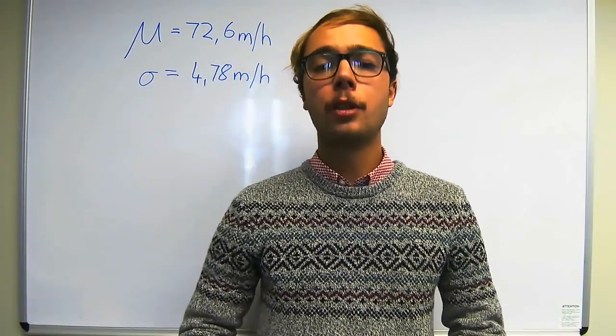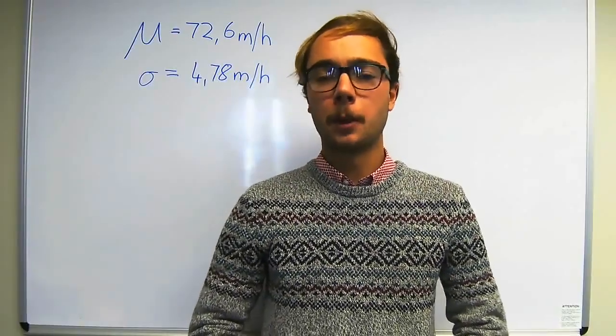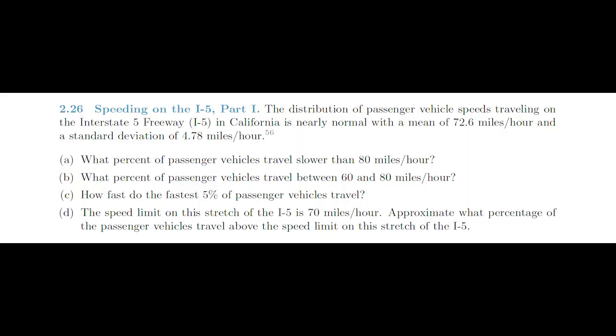In this video we'll be dealing with question 2.26 of the prescribed textbook. The question says the distribution of passenger vehicle speeds traveling on the Interstate 5 freeway in California is nearly normal with a mean of 72.6 mph and a standard deviation of 4.78 mph.